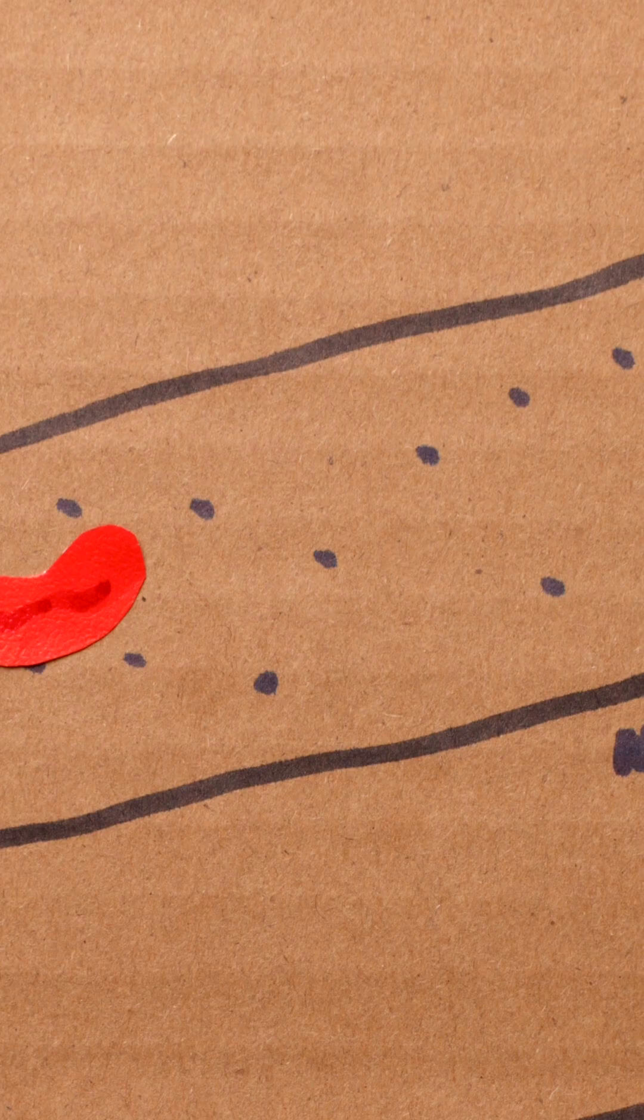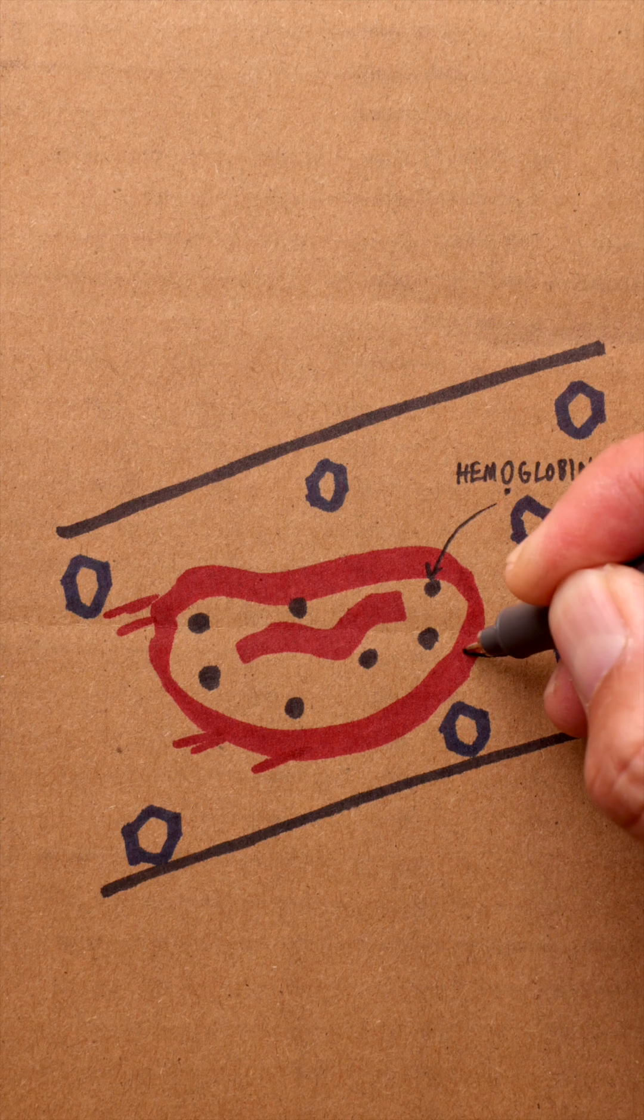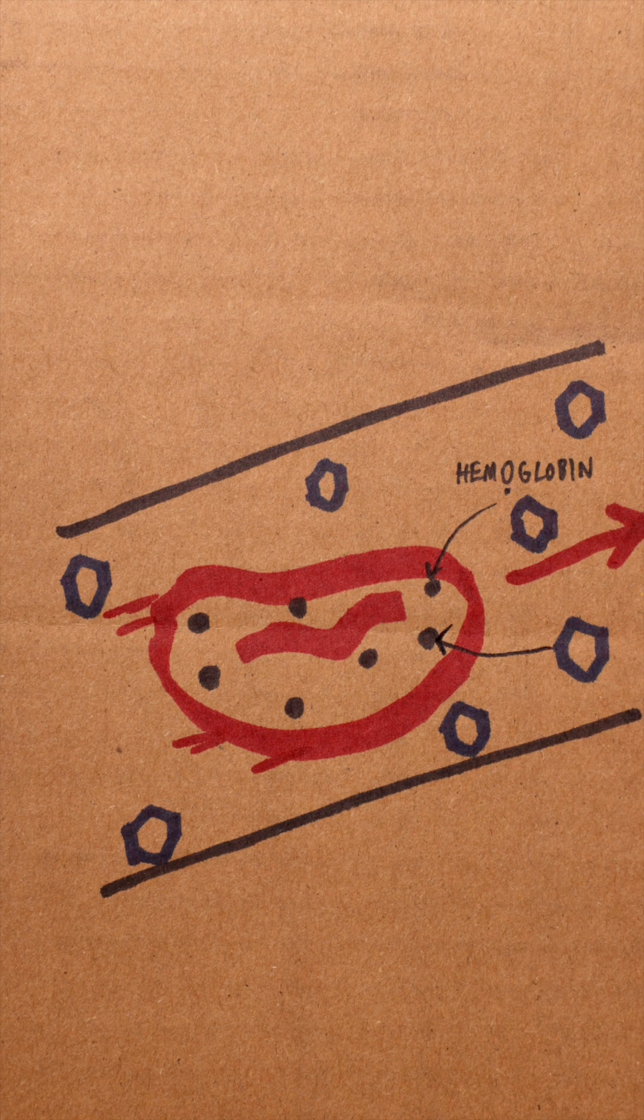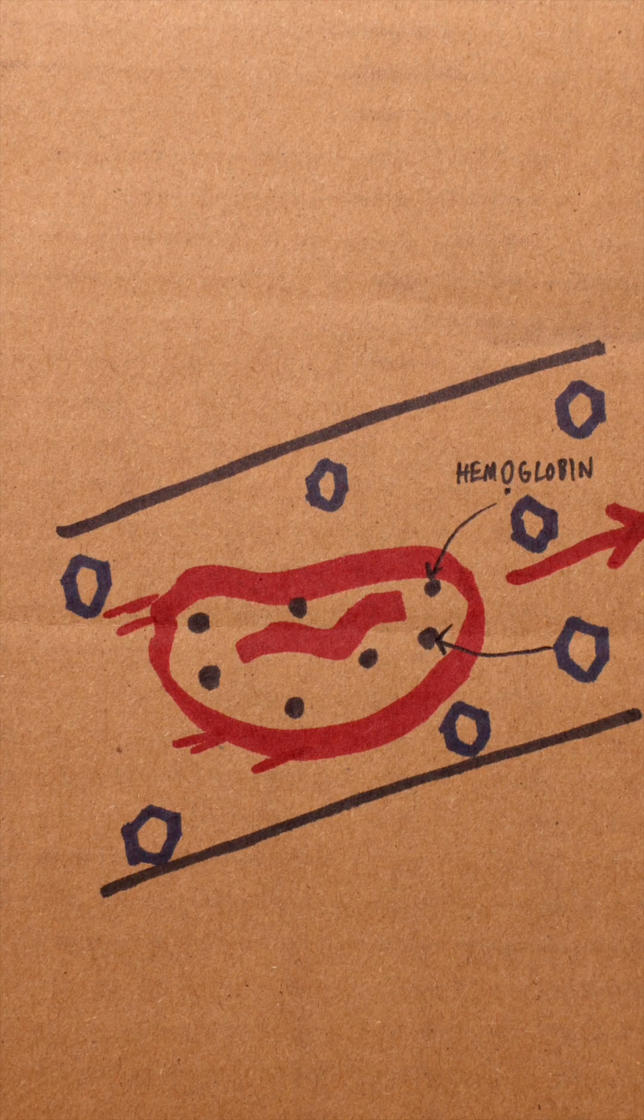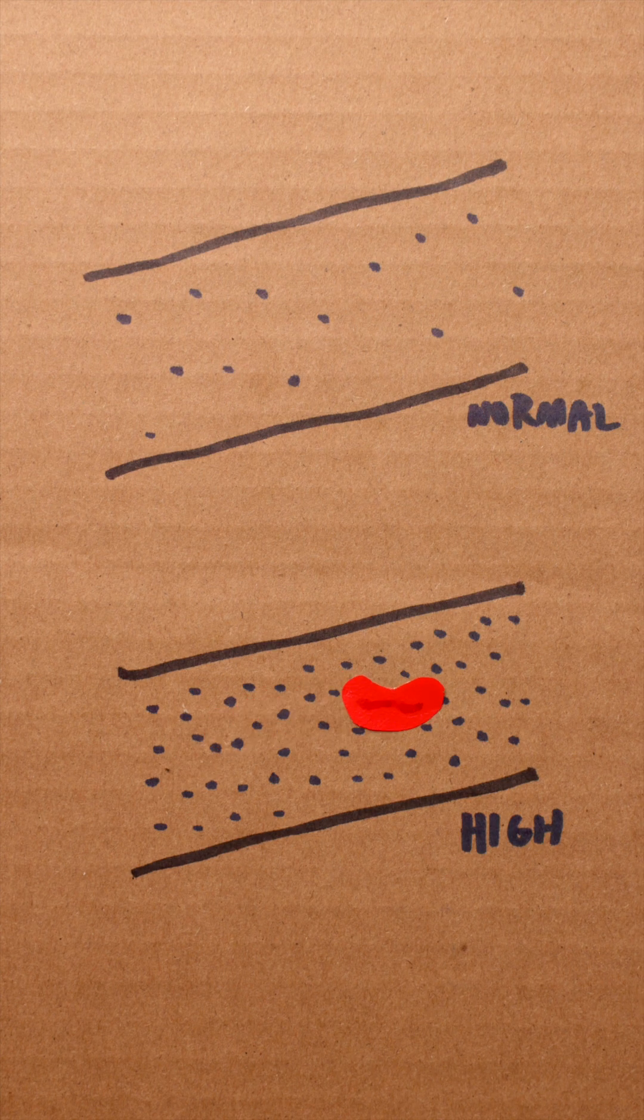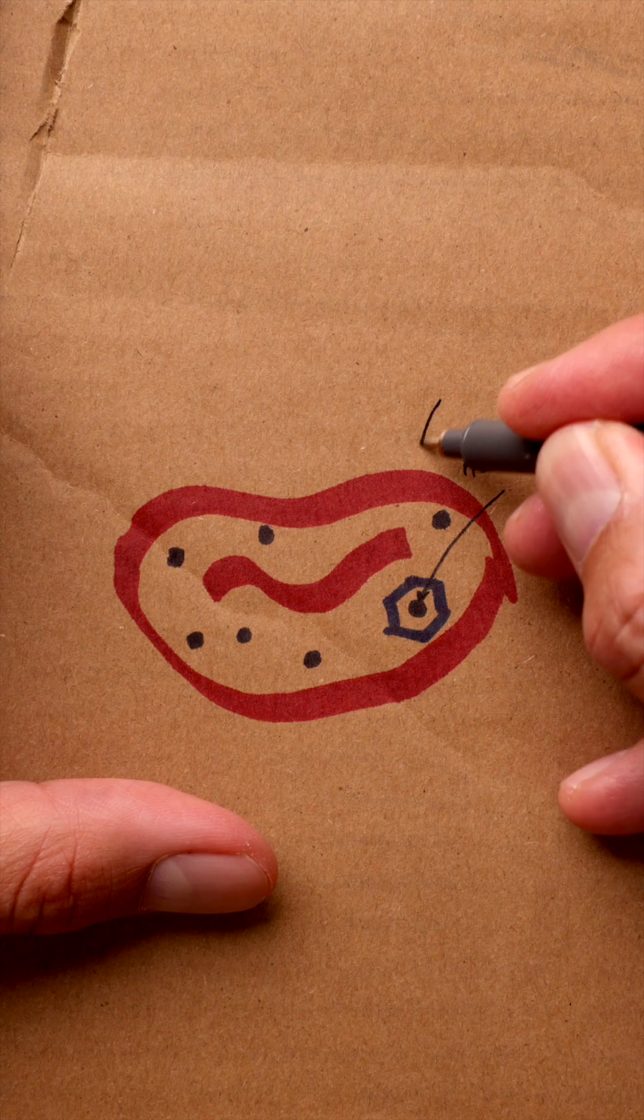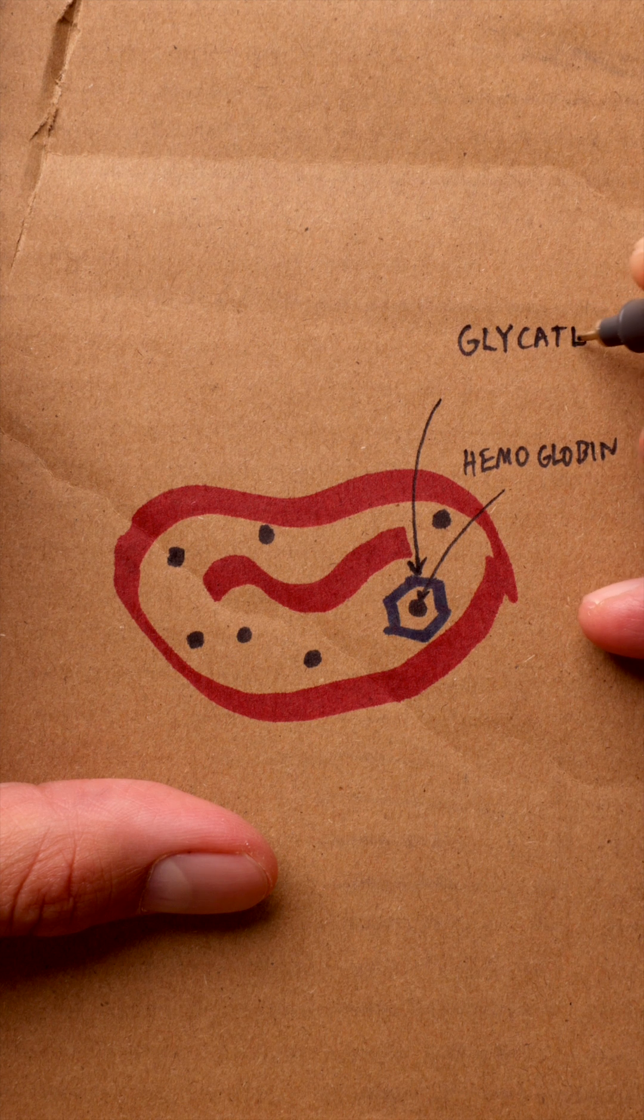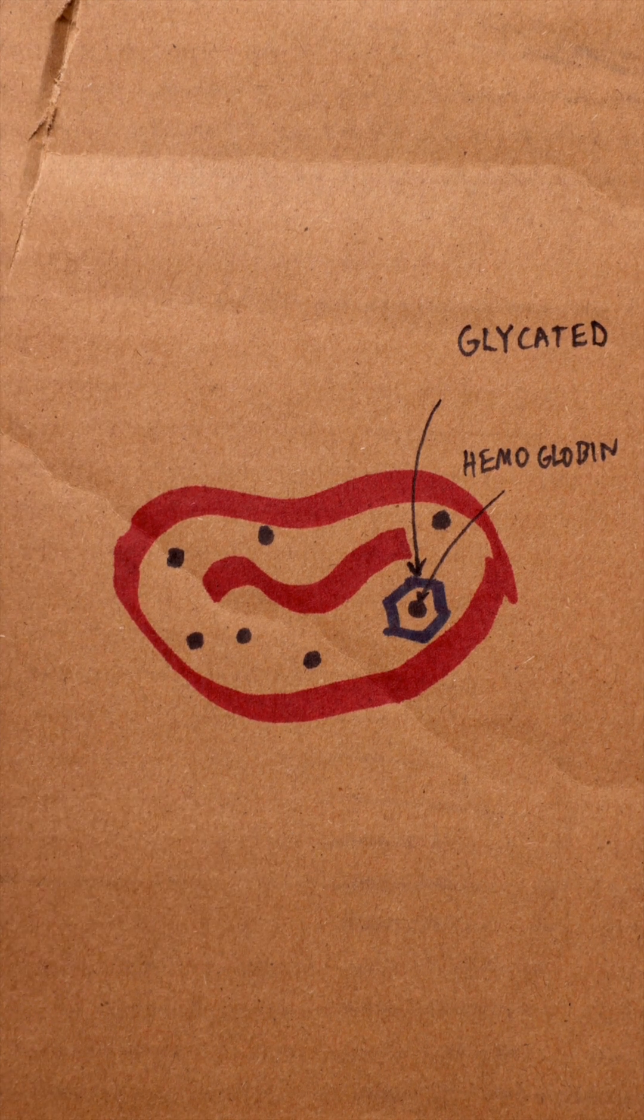As red blood cells move through, glucose can stick to hemoglobin, which is the protein in our red blood cells that carries oxygen to the rest of the body. When our blood sugar is high, there's a greater chance that more glucose will stick to the hemoglobin, forming what's called glycated hemoglobin.